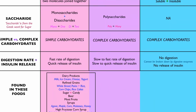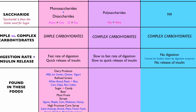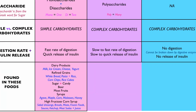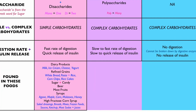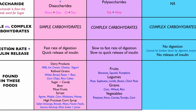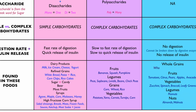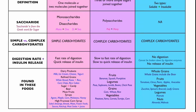In terms of foods: simple sugars are found in dairy products, refined grains, sugar and candy, beer, most fruits, syrups, and high fructose corn syrup. Starches are found in fruits like bananas, squash, and pumpkins, as well as legumes, grains, and vegetables like potatoes, yams, carrots, turnips, and corn. Fibers are found in whole grains — where the fiber resides in the bran — as well as fruits, vegetables, legumes, and nuts.